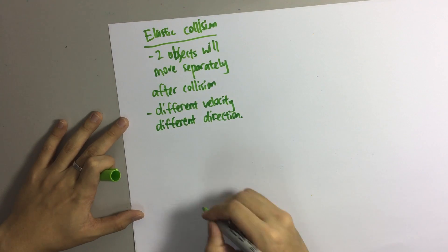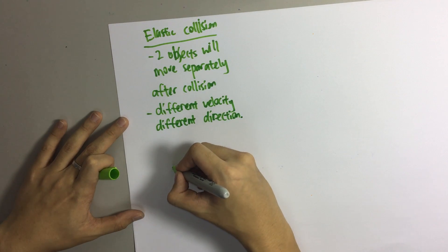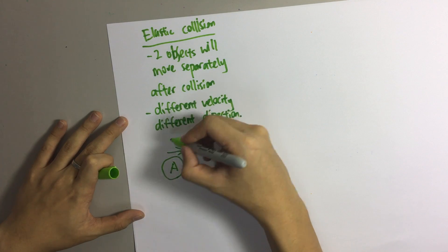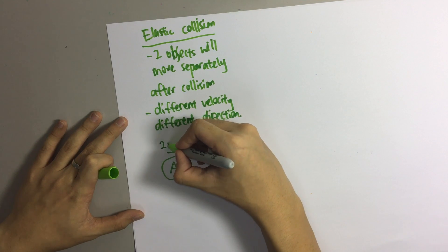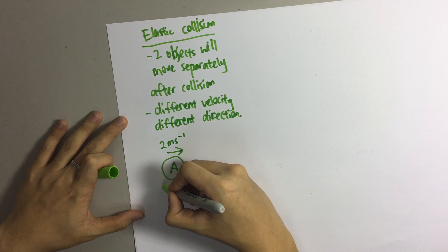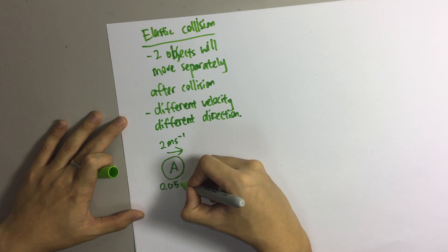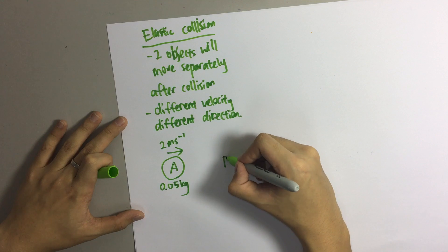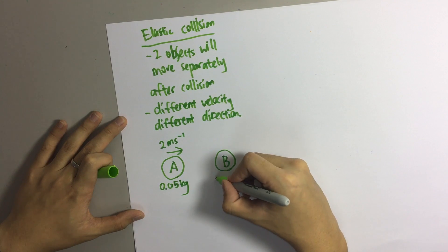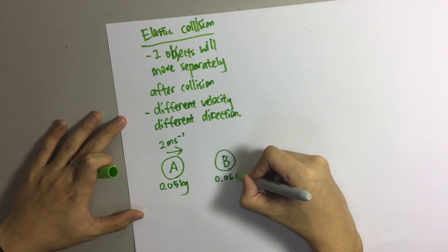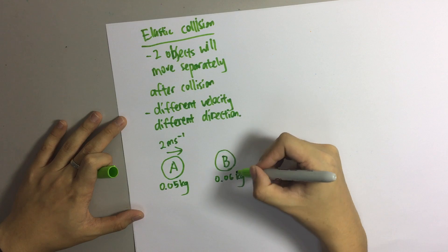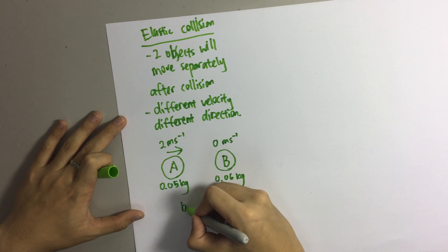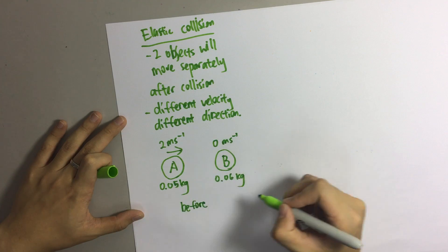So this question will be like this: object A is moving at a speed of 2 meters per second and the mass of it is 0.05 kilogram. It is going to hit object B, which has a mass of 0.06 kilogram and is not moving. This is the situation before collision.